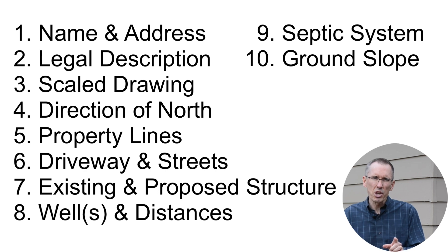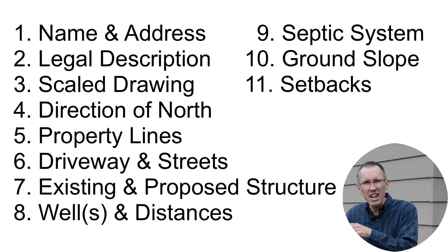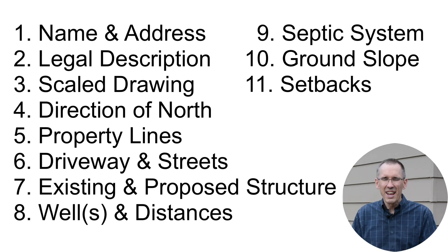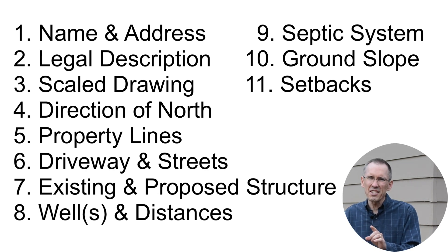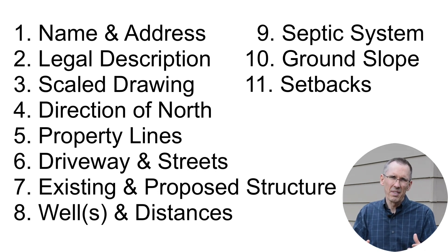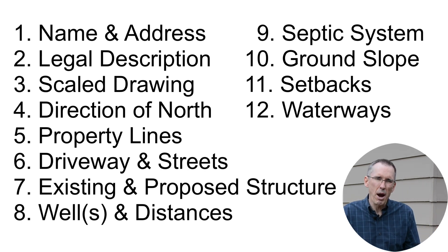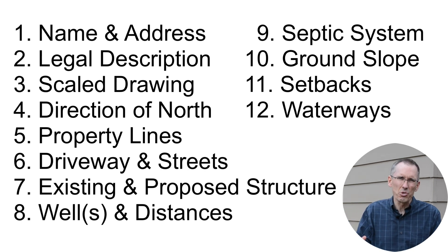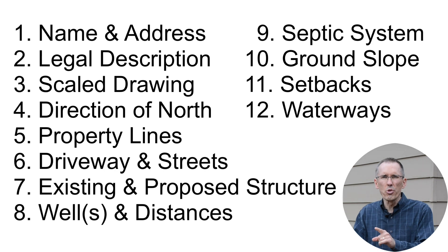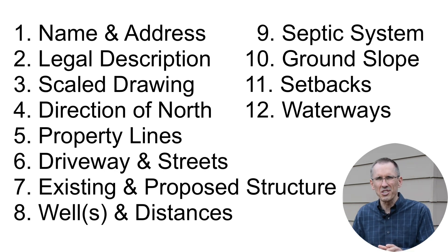Number ten, the ground slope and the direction of the slope must be shown. Number eleven, proposed setbacks from property lines. A setback is simply the distance from your property line to what you've proposed to build on the property. Number twelve, if you have any waterways on your property like streams, ponds, or springs, you must show their location relative to the proposed structure or structures.